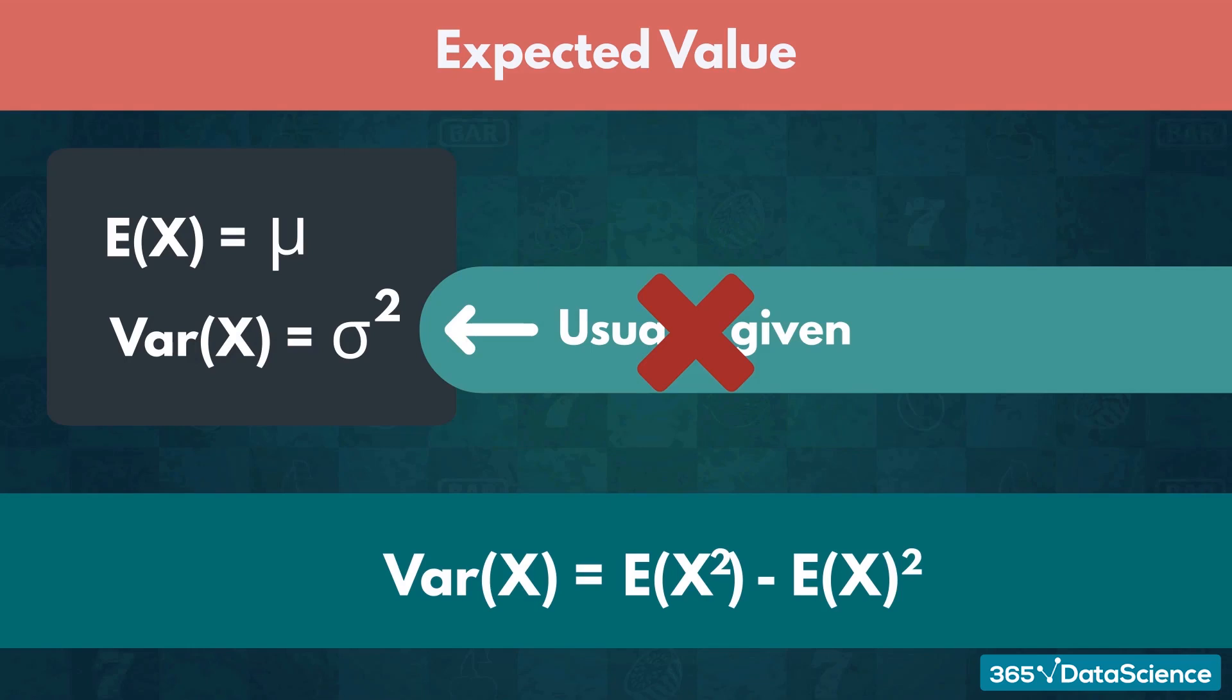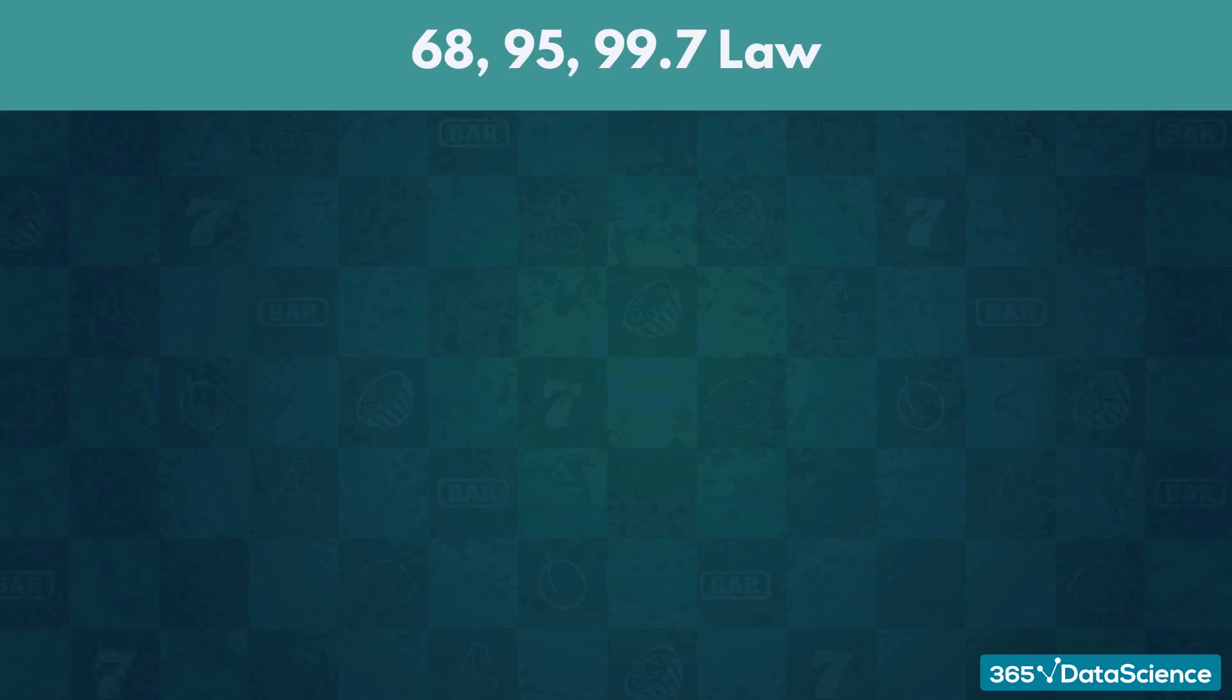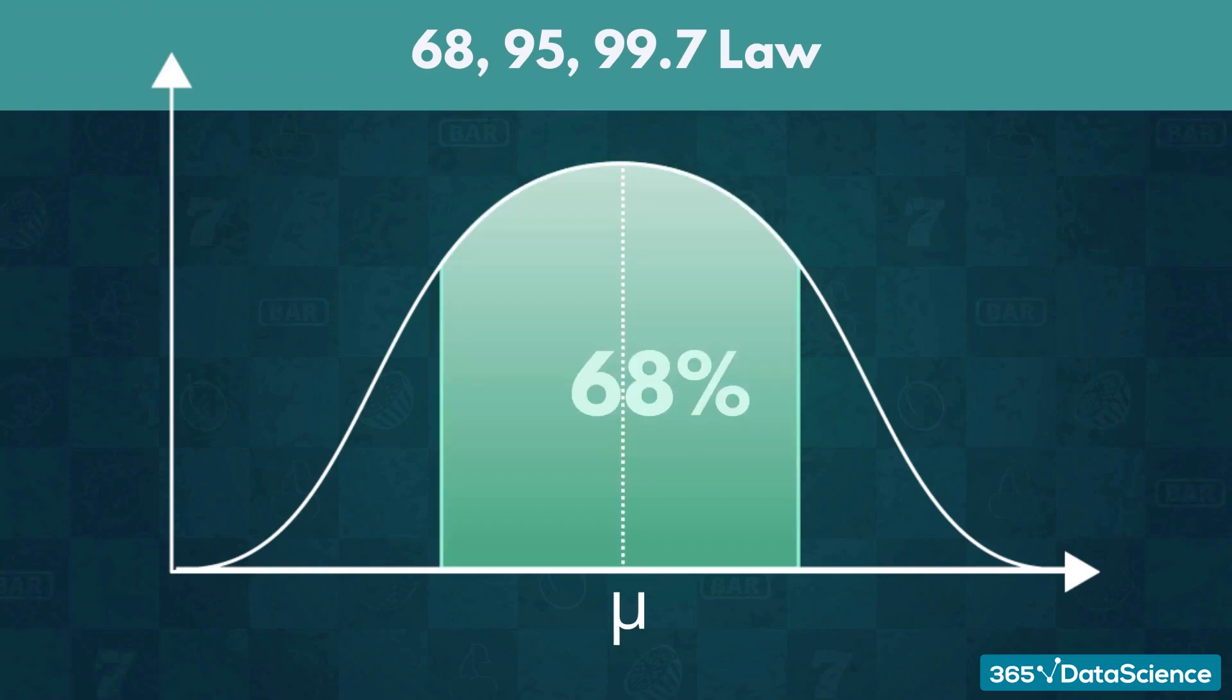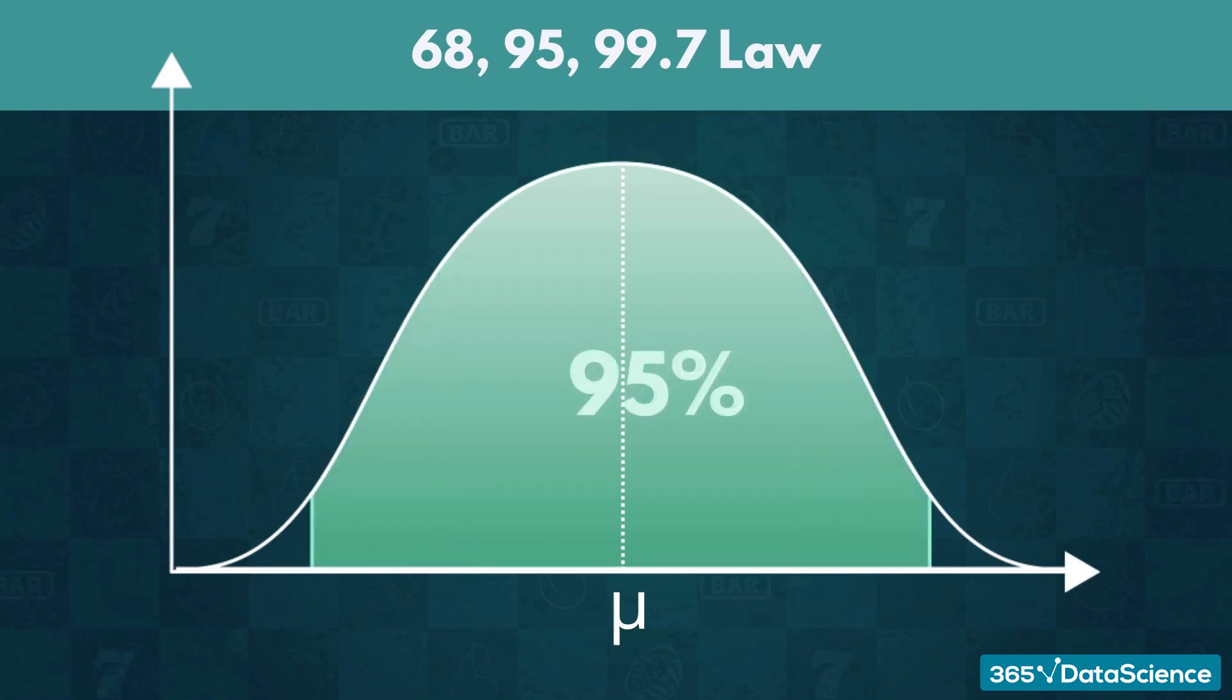Good job! Another peculiarity of the normal distribution is the 68-95-99.7 law. This law suggests that for any normally distributed event, 68% of all outcomes fall within one standard deviation away from the mean, 95% fall within two standard deviations, and 99.7 within three.